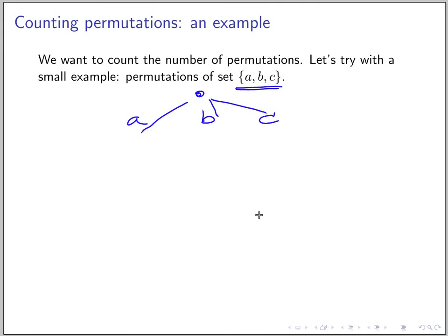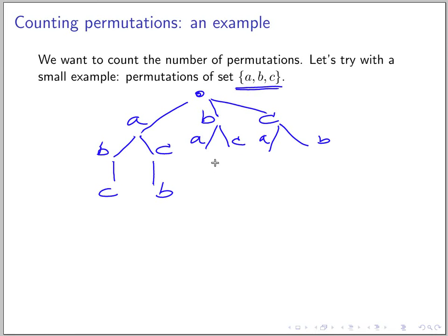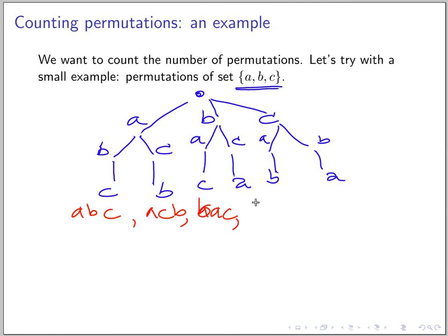After picking one element, for the second step: if we picked a, we can pick b or c; if we picked b, we can pick a or c; if we picked c, we can pick a or b. In the last step, only one element remains. This gives all six permutations: a-b-c, a-c-b, b-a-c, b-c-a, c-a-b, c-b-a.